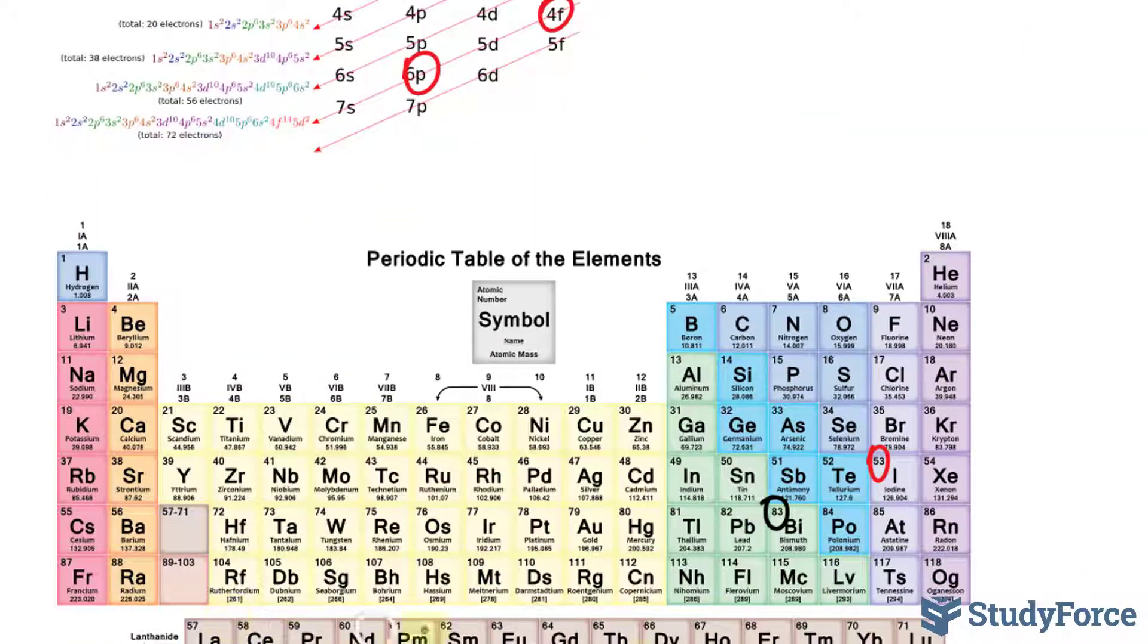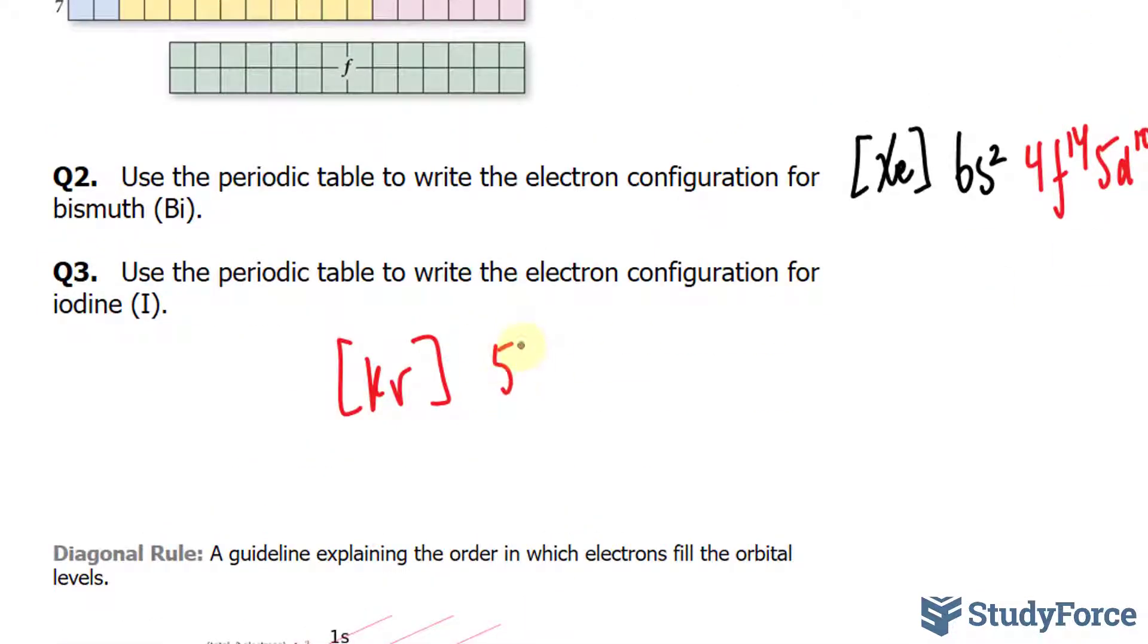We don't have to worry about the F block this time. Iodine is in the 5th row. We'll write down 5S2—it holds 2 electrons.